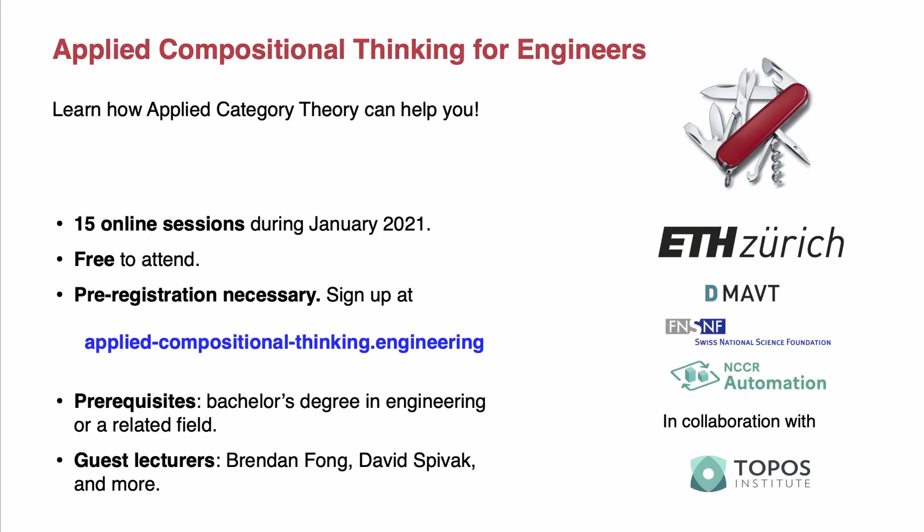Co-design can be formulated in terms of the mathematical language of category theory. This is a type of math that is well suited for talking about composing systems into larger systems, for studying interconnection, composition, and formalization across application domains.